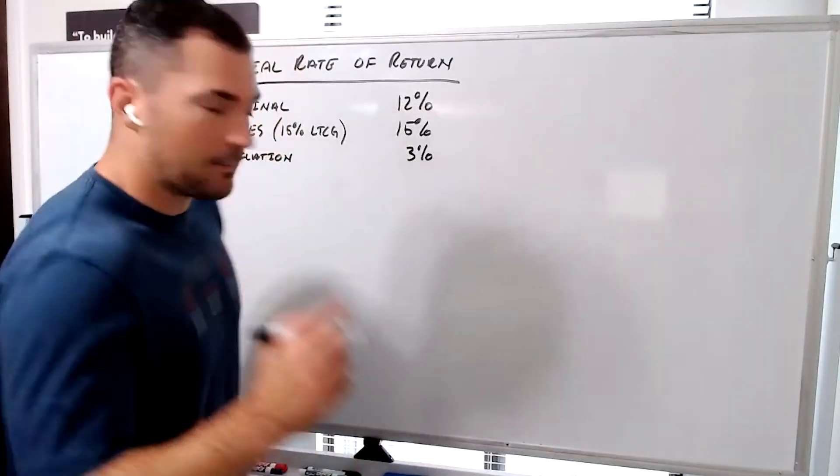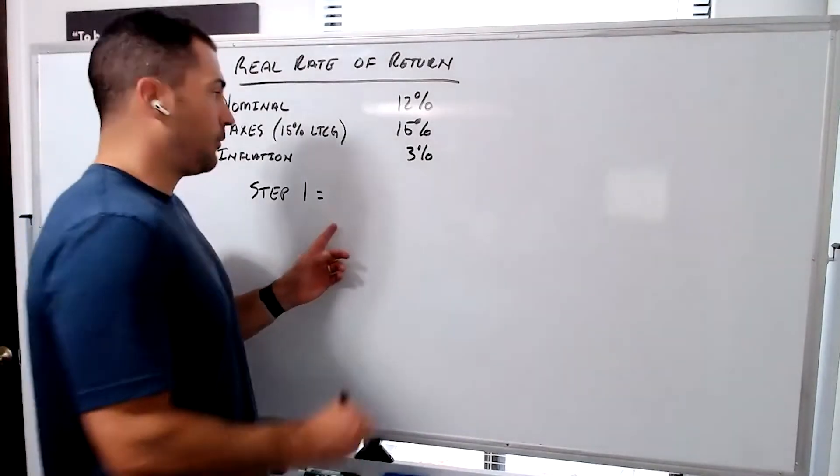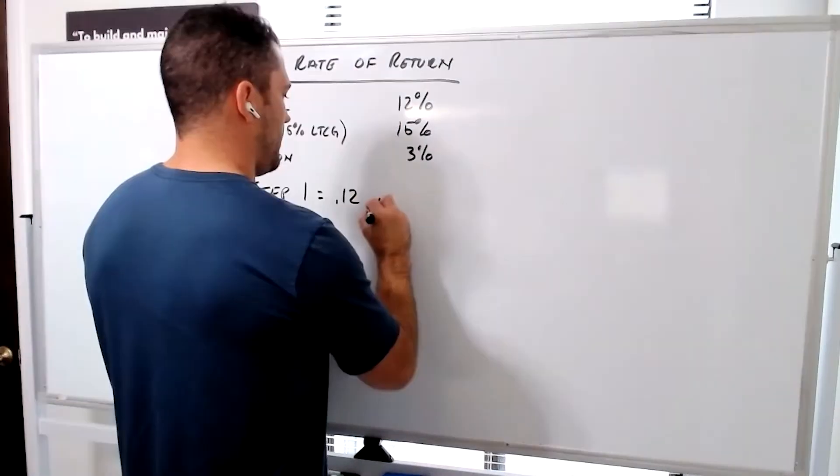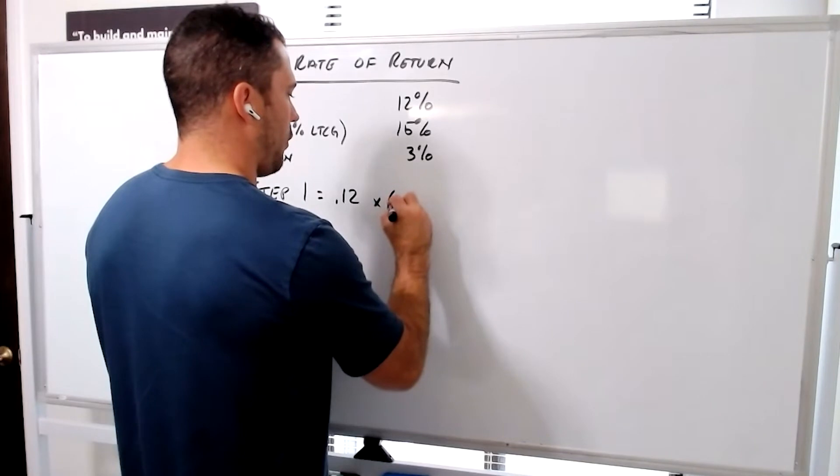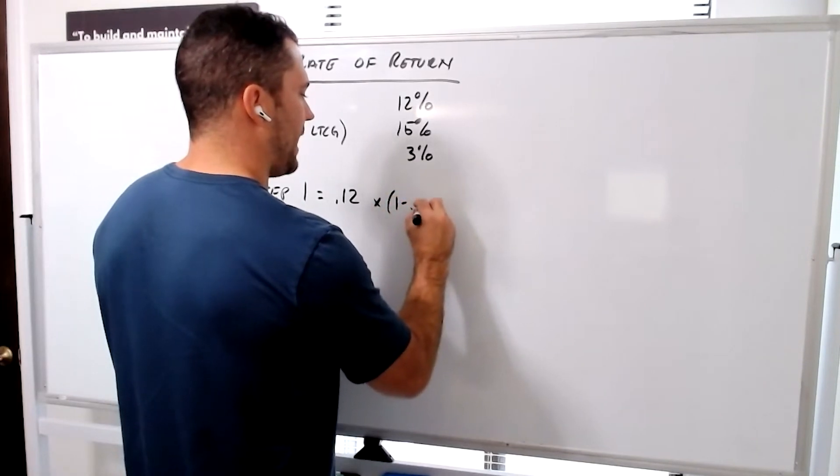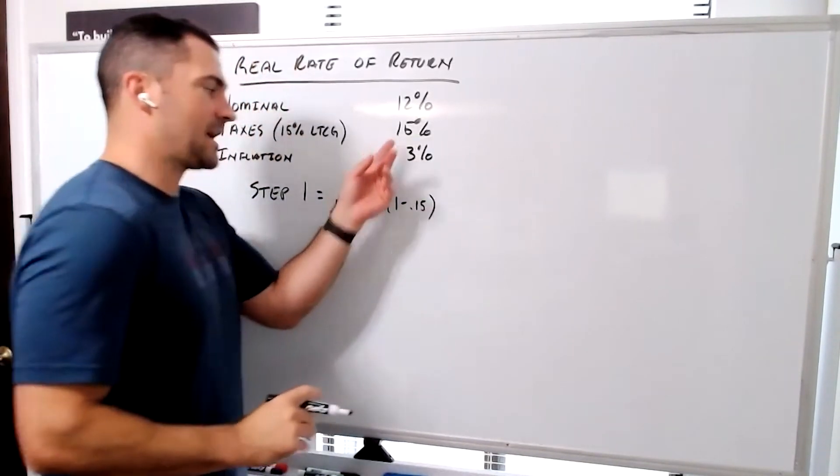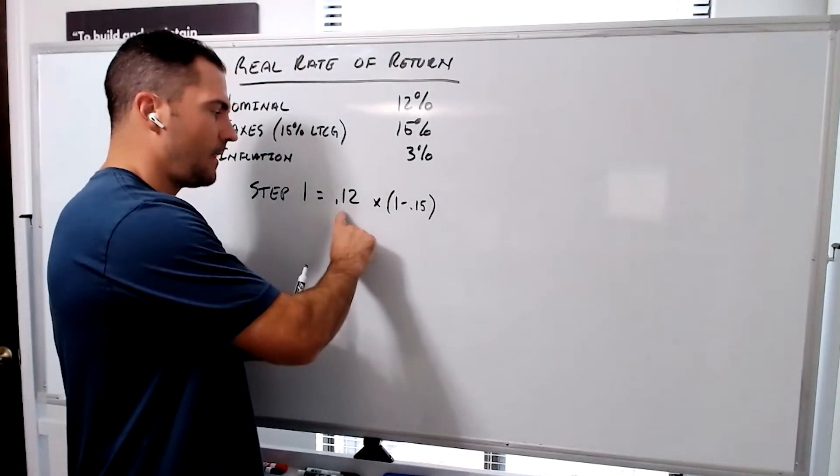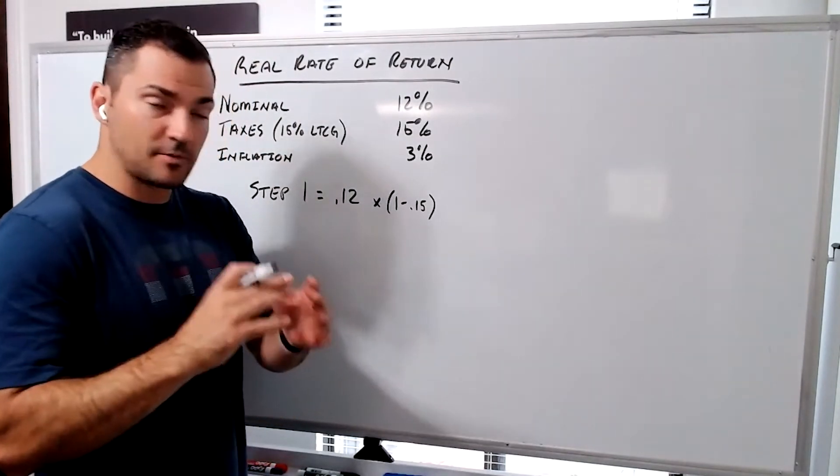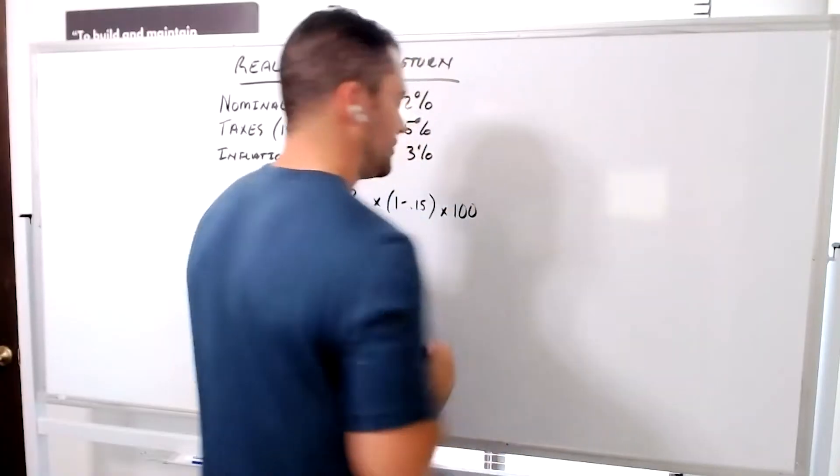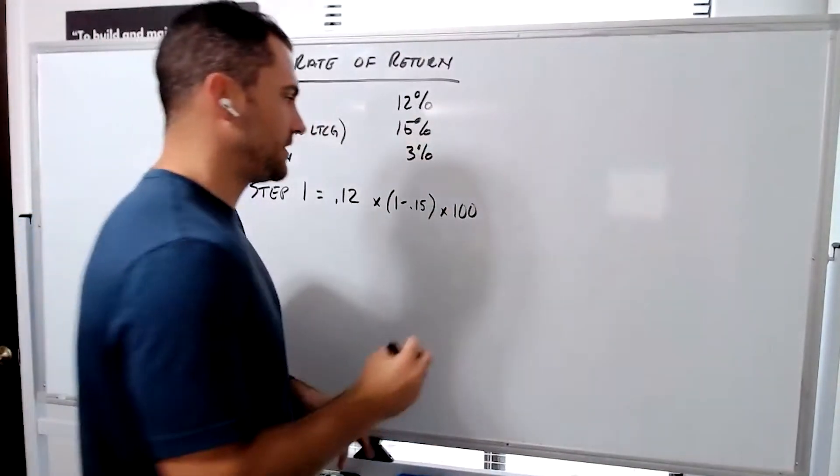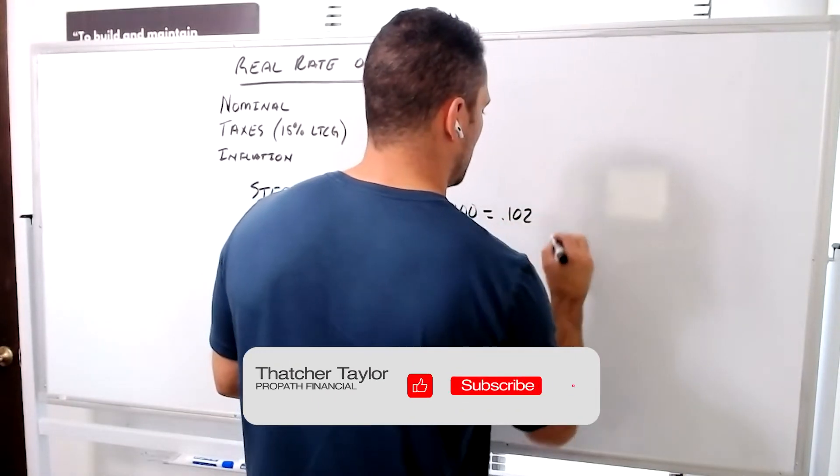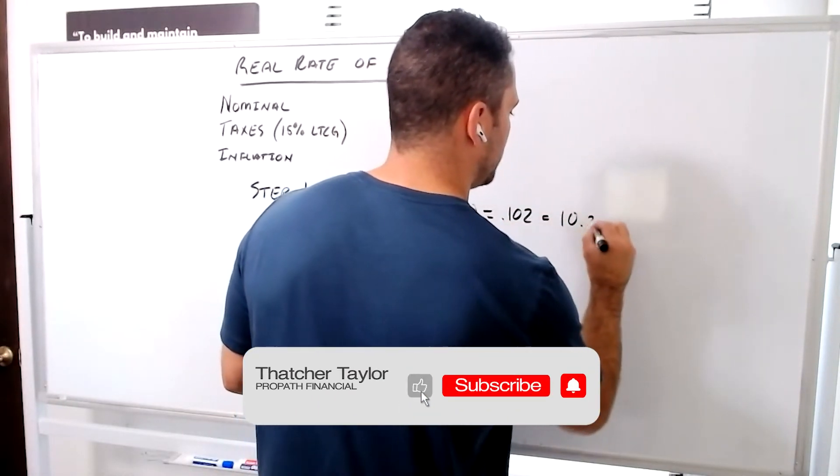Now we've got our three numbers. We're going to do step one. Step one is we're going to take our nominal percentage, 0.12, and multiply that by 1 minus 0.15, which is our tax rate. We're essentially just trying to find 85% of 12%. We're going to multiply that by 100 to get a solid percentage. That comes out to be 0.102, which equals 10.2%.